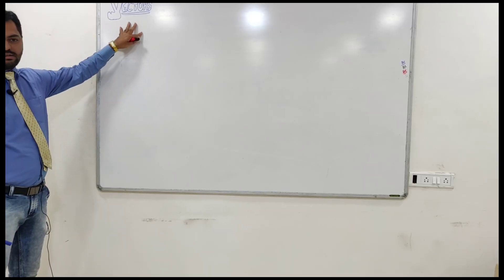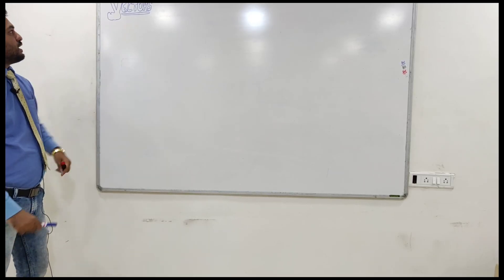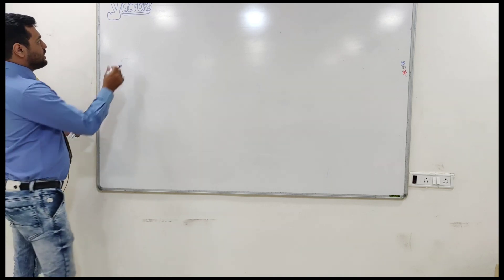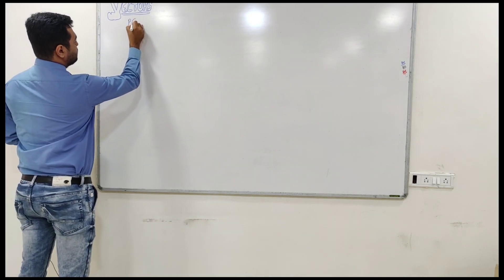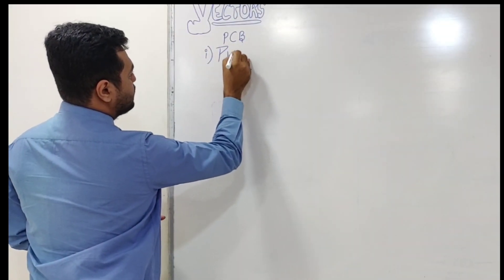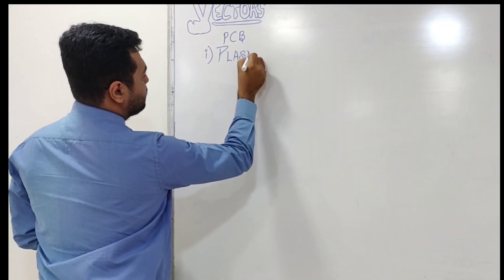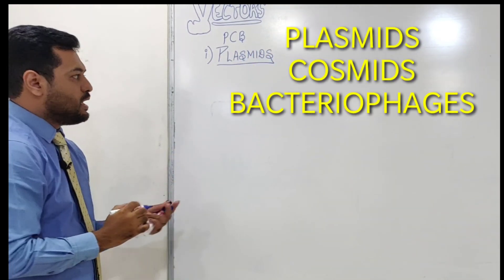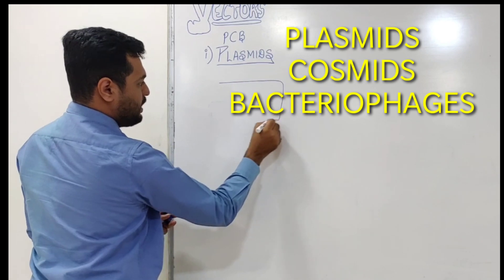The next discussion is about vectors, the second tool of recombinant DNA technology. In vectors, we have three options. The first option is plasmids.